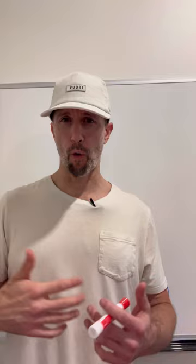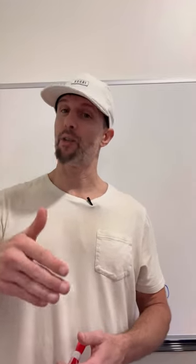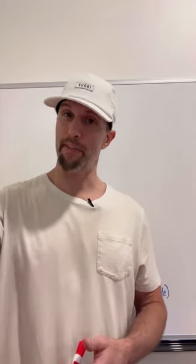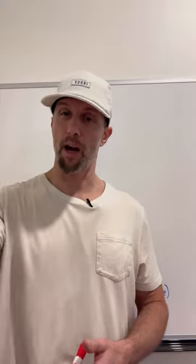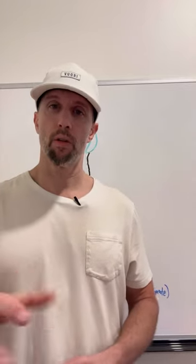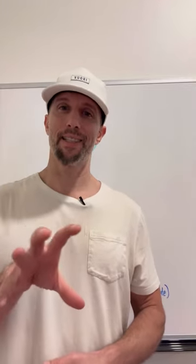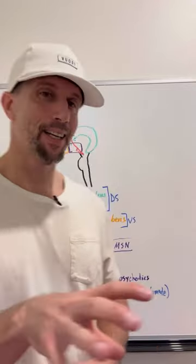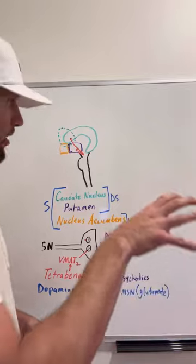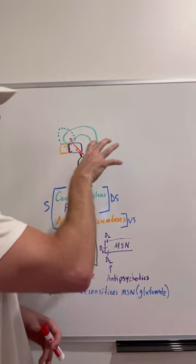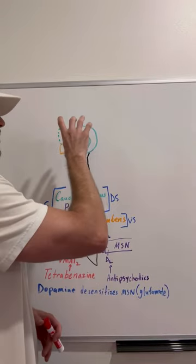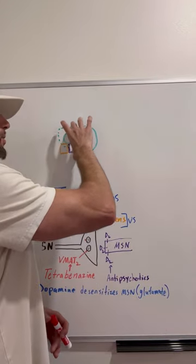At around age 40, if you have the Huntington's disease allele — it's autosomal dominant, so your offspring would have a 50% chance of also receiving it — it will cause death preferentially in this area of our brain called the dorsal striatum.